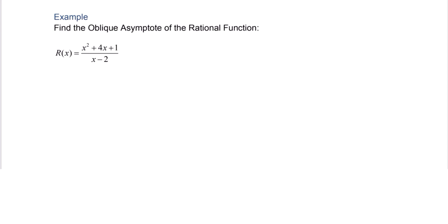In this video we'll look at finding oblique or slant asymptotes. Notice that the degree of the numerator is 2 and the degree of the denominator is 1. The degree of the top is one more than the bottom. That's what indicates we need to find the oblique asymptote.